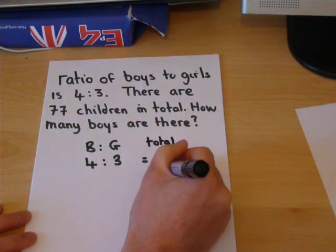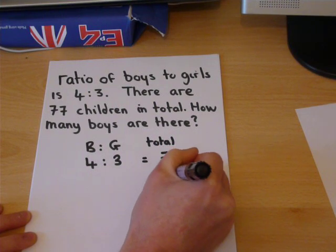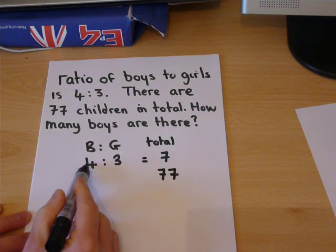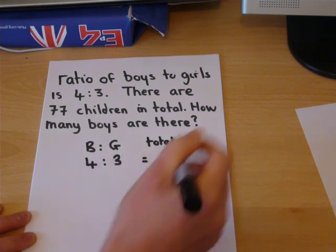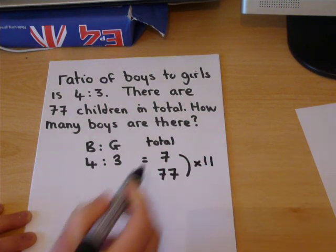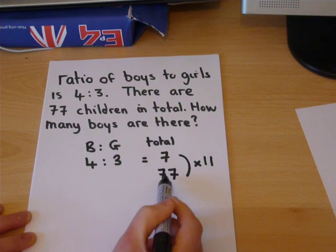So in total, there are 77. So in each group, there are 4 boys and 3 girls. There must therefore be 11 groups, because 7 times 11 is 77.